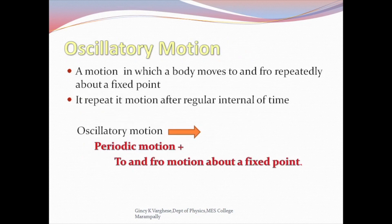Now we can define what is oscillatory motion. That is a motion in which a body moves to and fro repeatedly about a fixed point and repeats its motion after a regular interval of time. From the definition, it is clear that all oscillatory motion is periodic, but all periodic motion is not oscillatory. That is, oscillatory motion is precisely periodic motion plus to and fro motion about a fixed point.